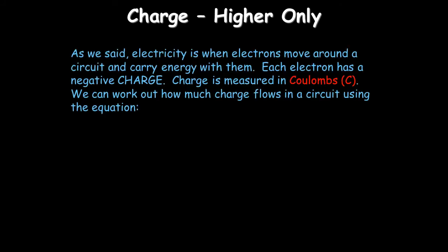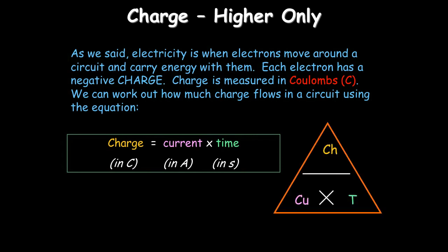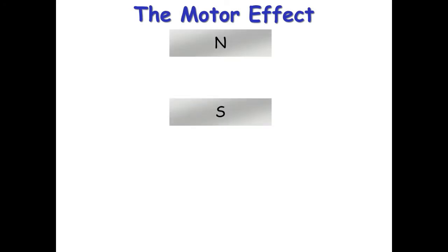For higher only: charge is measured in coulombs (C — capital, named after a scientist) and represents how many electrons have flowed in a circuit. Charge equals current times time. The equation is given on the exam — rearrange to find what you need.